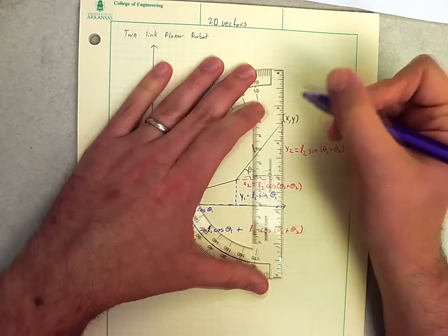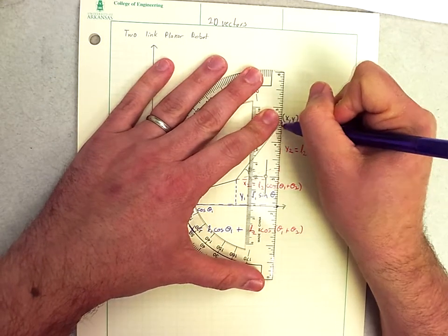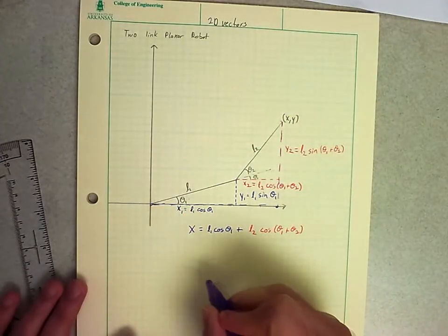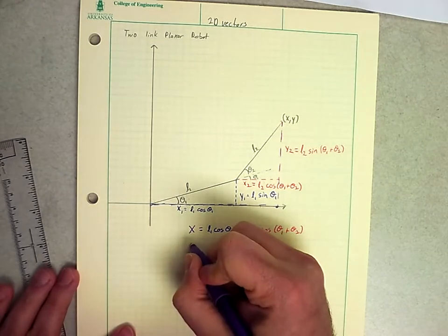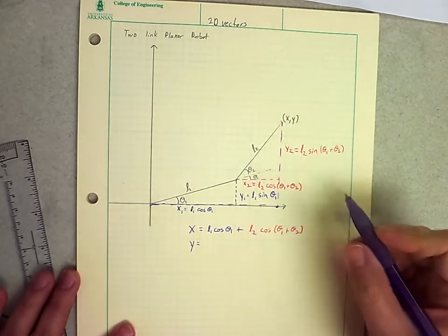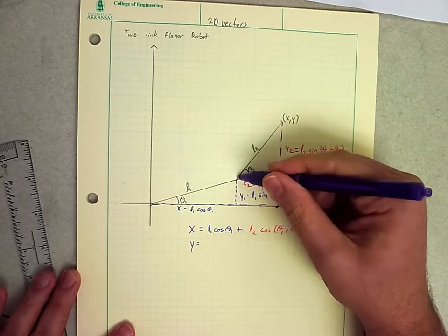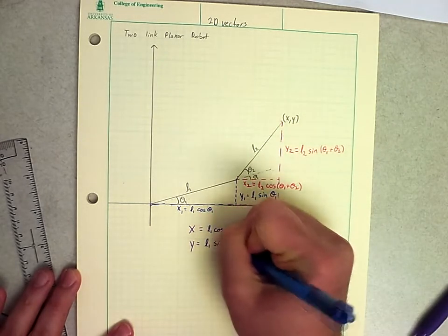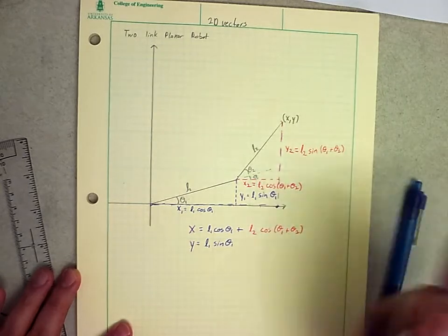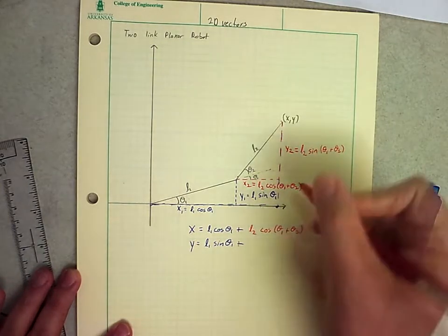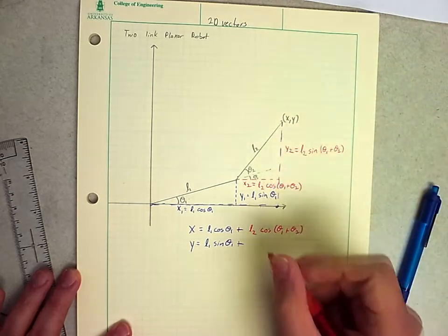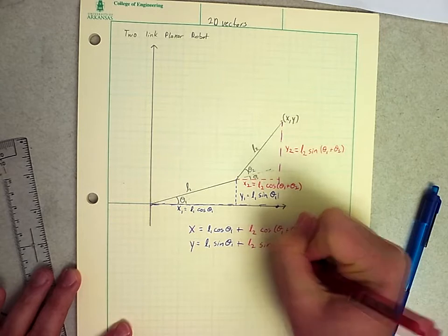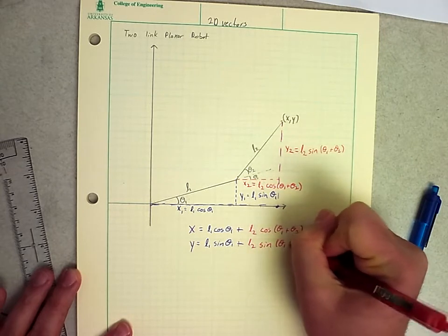Similarly, my y coordinate, which will go all the way from here, all the way down, is going to be L1 sine theta1 plus this part, which is L2 sine of (theta1 plus theta2).